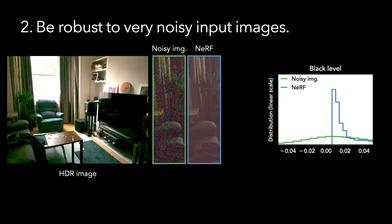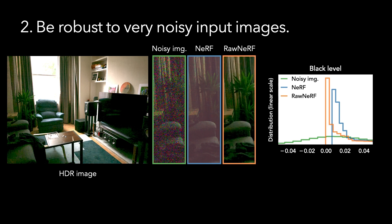Since a low dynamic range input image will clip values at zero, it throws away all the information present in these negative measurements, which is critical for achieving the correct contrast in dark regions. Standard NeRF trained on such clipped data doesn't recover the right black level and looks washed out. By comparison, Raw NeRF is able to recover the correct expected values by preserving the negative raw measurements, producing more detail and contrast.